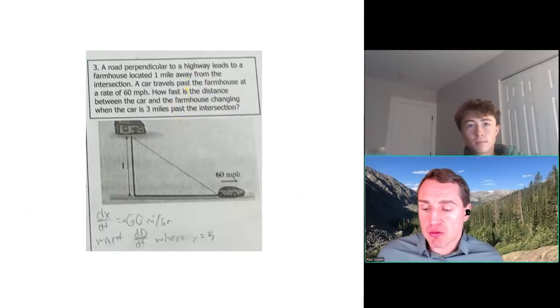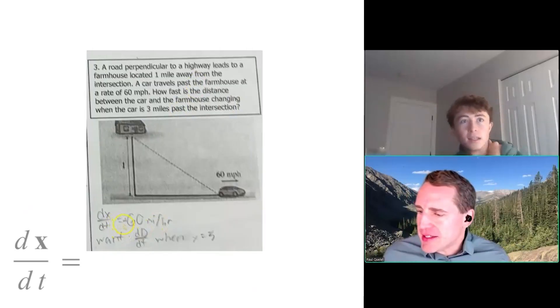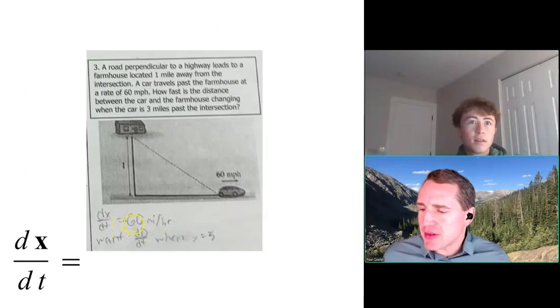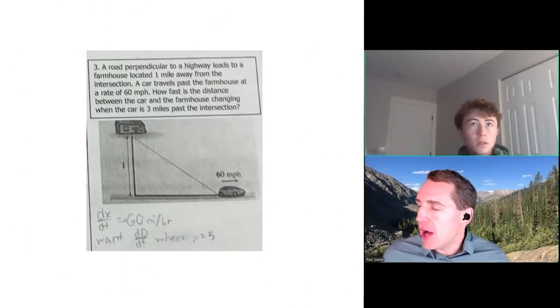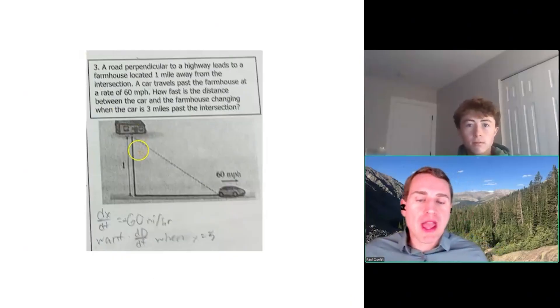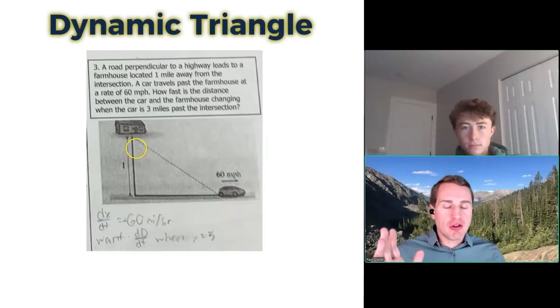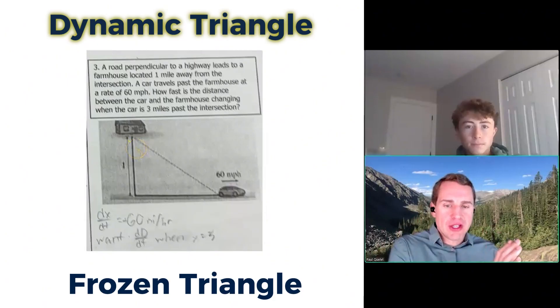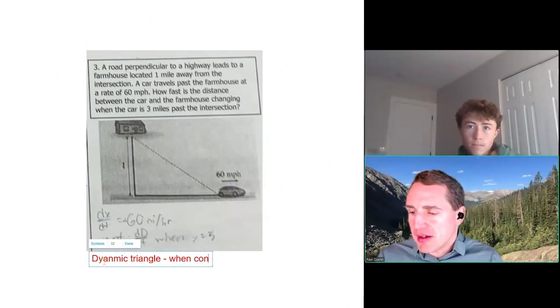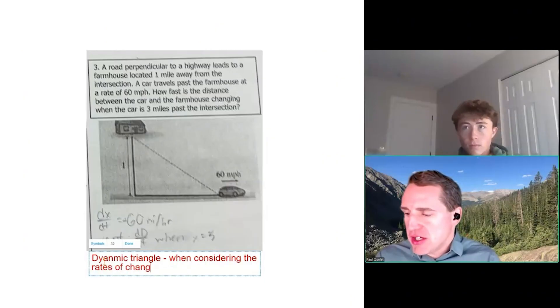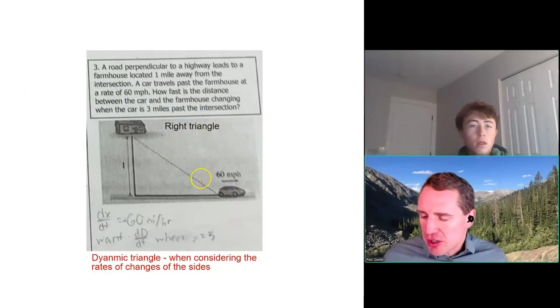This is a classic related rates problem, so this is definitely one to know how to do for an exam. You've got dx/dt and then you wrote down 60 miles per hour. So that's good. Now in a case like this, I'm going to almost recommend we have a dynamic triangle and a frozen triangle. The dynamic triangle is going to be when considering the rates of changes of the sides.